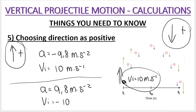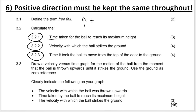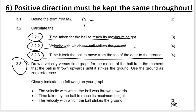Your choice of positive direction can greatly influence your calculations. When you get an exam question like this and choose a positive direction, you have to keep that the same throughout the entire question — through all sub-questions 3.2.1, 3.2.2, 3.2.3, and when you draw the graph. You cannot change your chosen positive direction, as it will completely mess up your calculations and be very confusing.